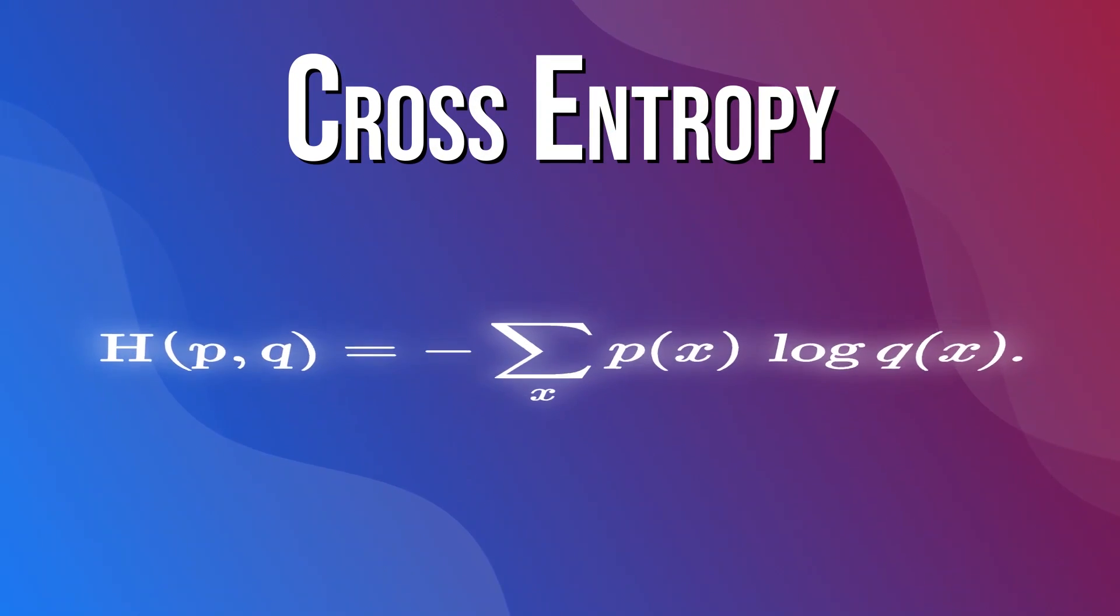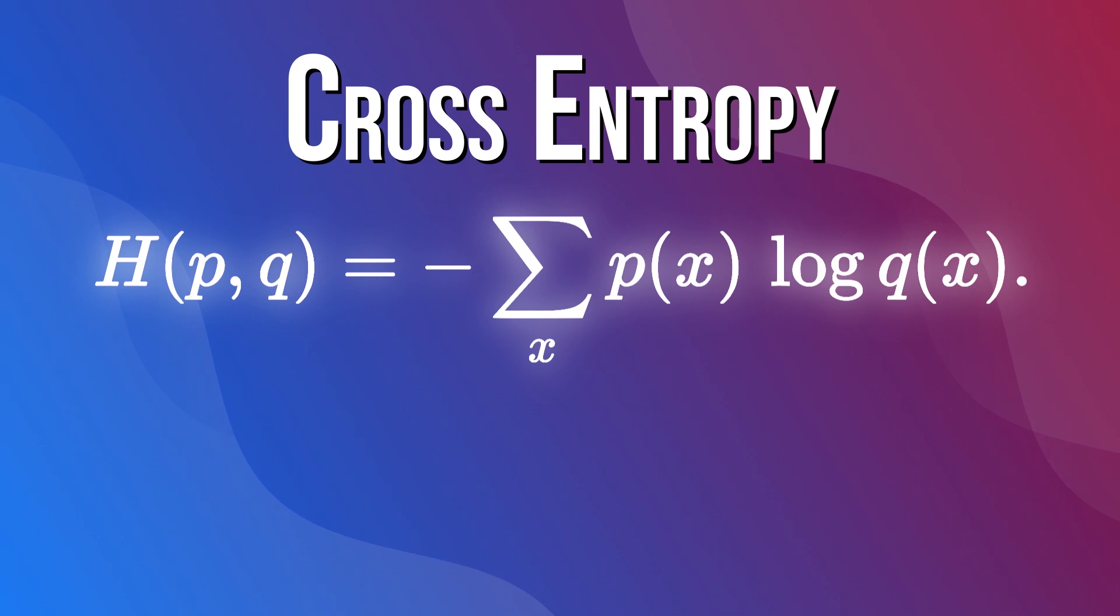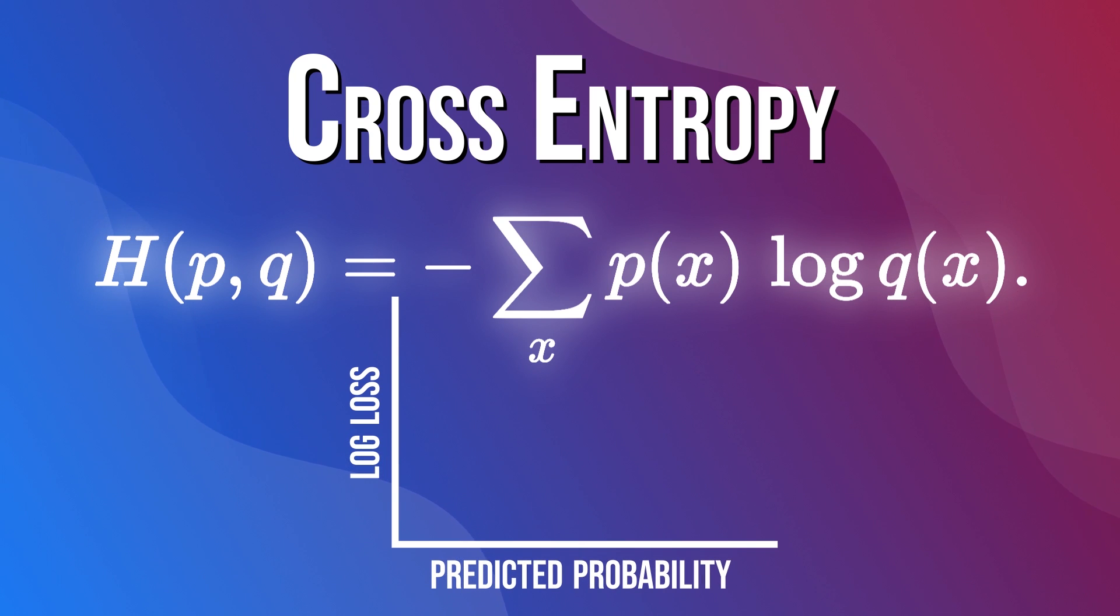It measures the performance of a classification model whose output is a probability value between 0 and 1. The cross entropy loss increases as the predicted probability diverges from the actual label. So predicting a probability of, say, 0.024 when the actual observation label is 1 would be bad and it would result in a high loss value. The ideal model would have a log loss of 0.